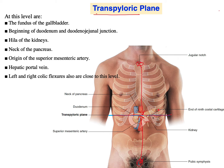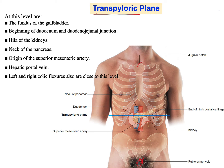If that seems too long a distance, there is another way. The xiphoid process of the sternum — you can feel it — and the umbilicus. The midway between the xiphoid process and the umbilicus is also the transpyloric plane. Either method works, so it's up to you. Now let's talk about the structures located at this plane.